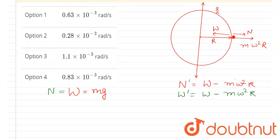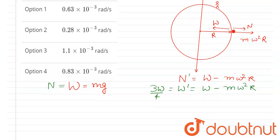So this W' here is 3/4 W. Okay, so we'll write here as 3/4 mg equals mg minus m·ω²·R.